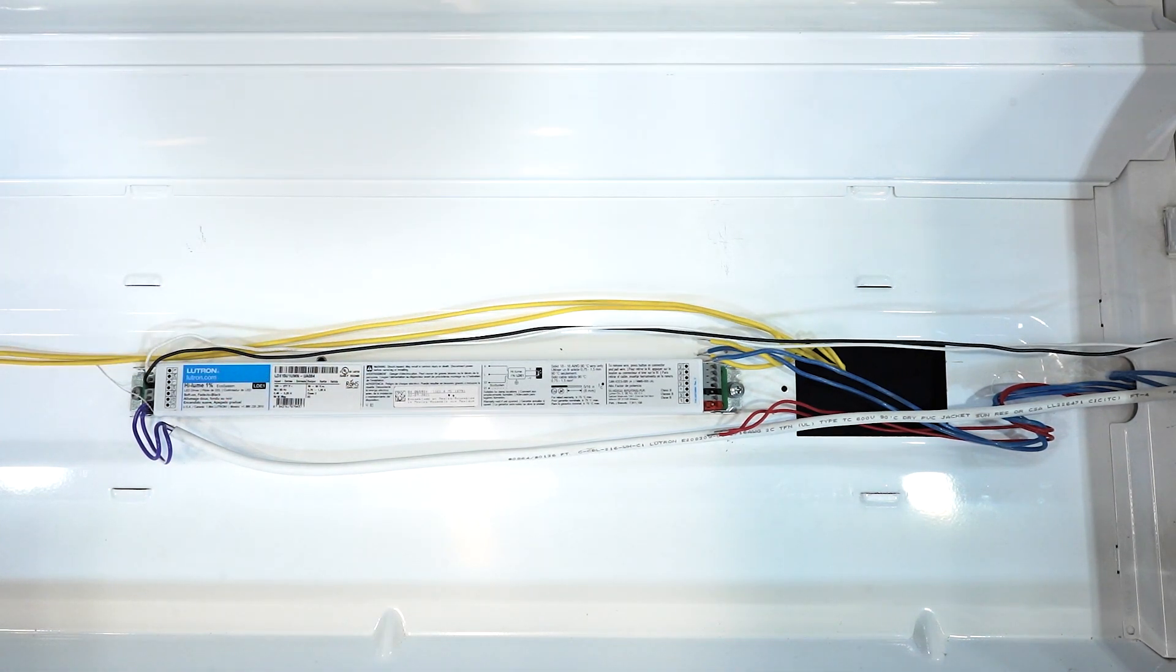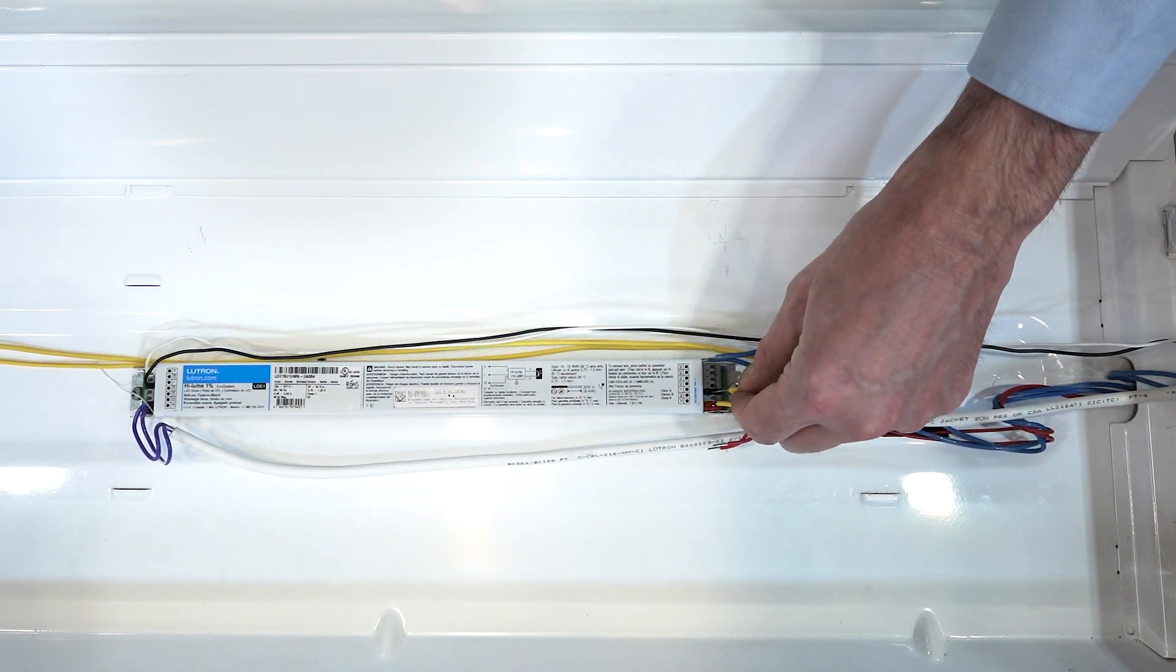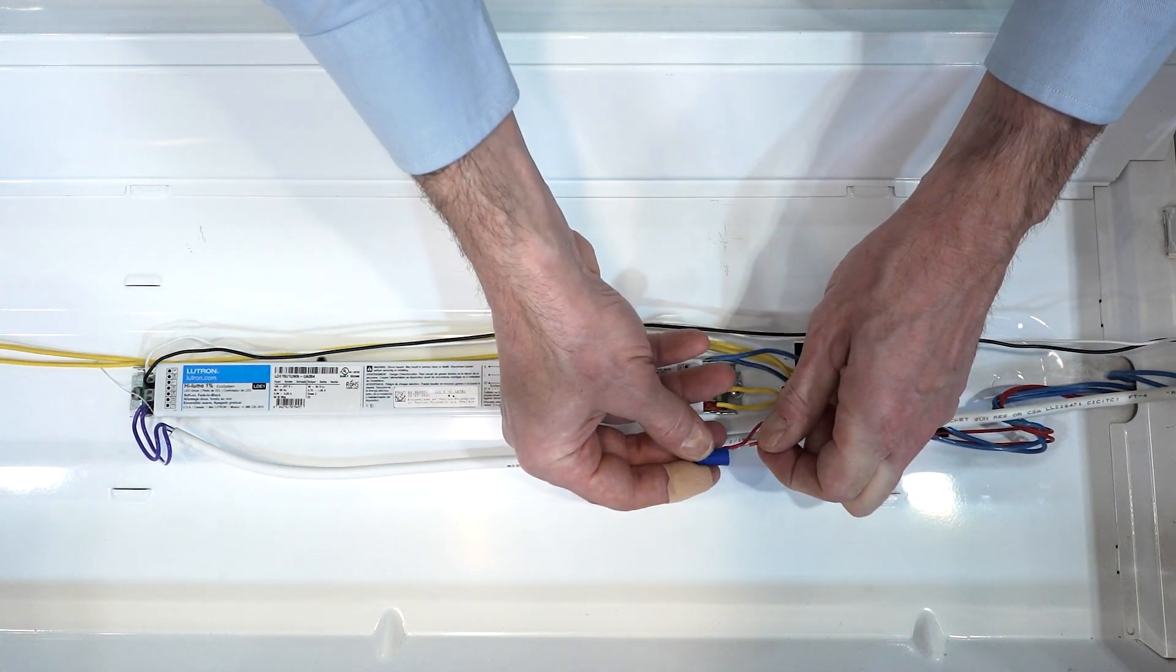In our example here, we're using a C-Flex retrofit kit by Light Efficient Designs. To wire this kit, all you need to do is connect the yellow wires to the red and black terminals, and cap off the red and blue wires.